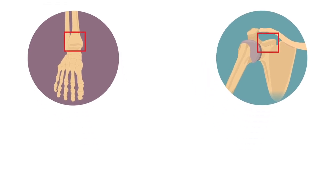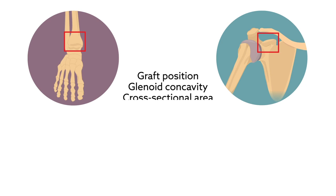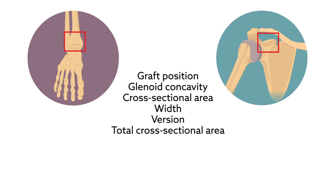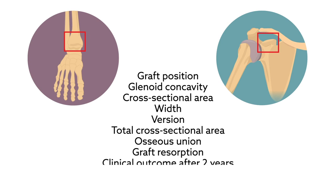Two fellowship-trained musculoskeletal radiologists assessed graft position, glenoid concavity, cross-sectional area, width, version, total cross-sectional area, osseous union, and graft resorption at a follow-up of 8 months. Clinical outcome in terms of instability was also assessed after 2 years.